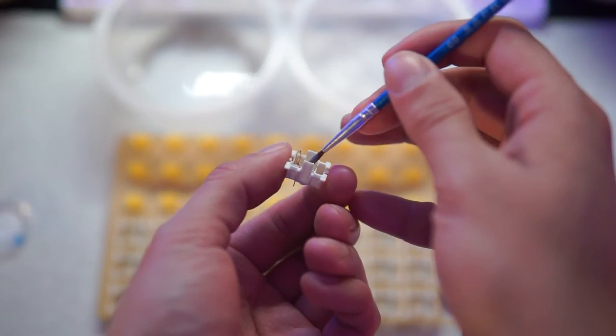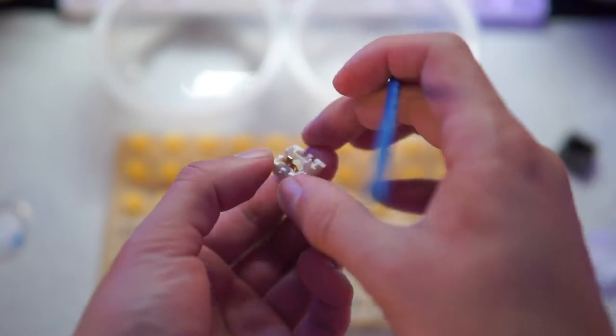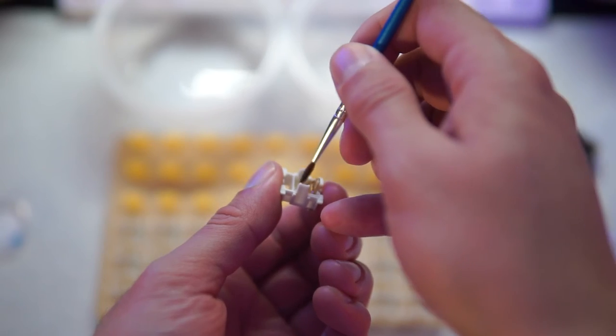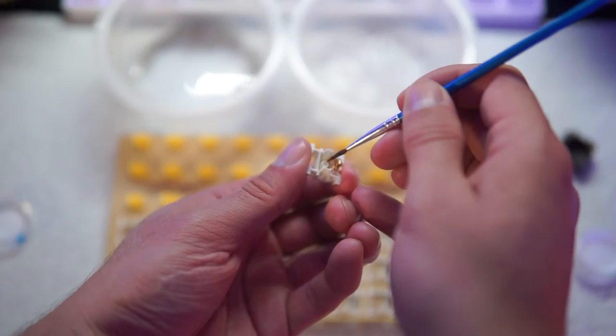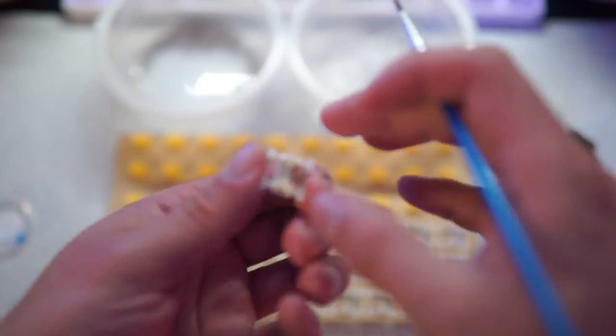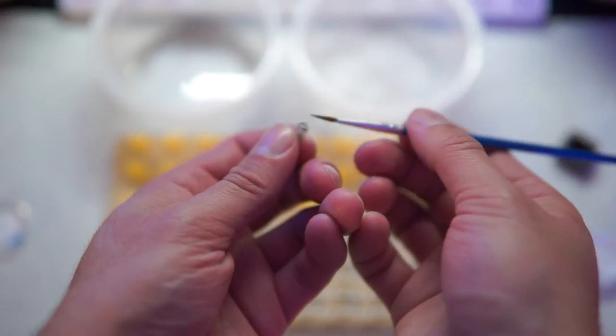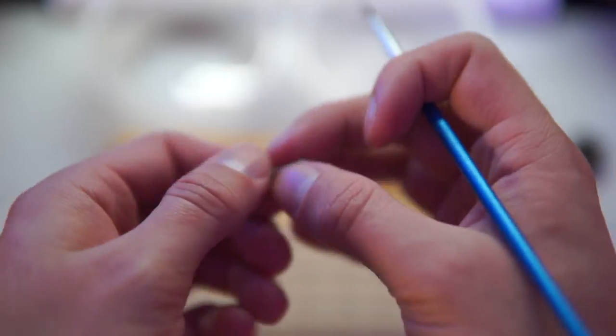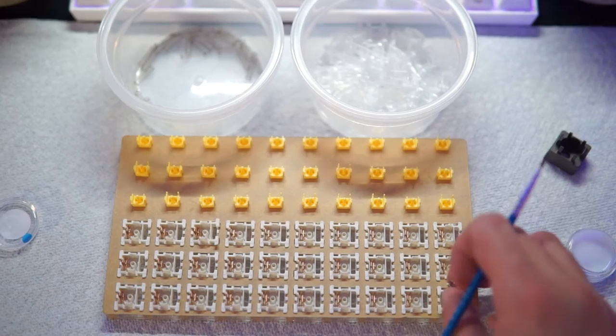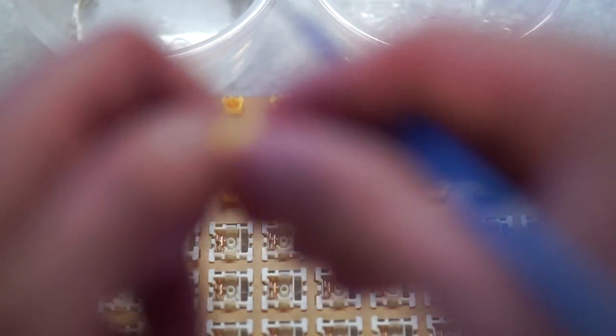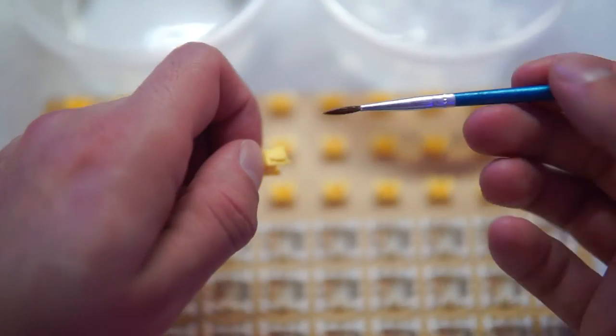I first start with lubing the bottom of the switch housing itself. Followed by both ends of the springs. And next comes the stem. I try to make sure all four sides got a nice even coat.